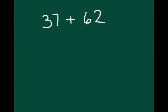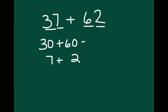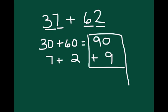All right, so with a Place Value Break Apart, we can think about it as just looking at our place value. For example, we could think of this as 30 plus 60 — 3 tens and 6 tens. And then we can also think of it as 7 plus 2. So by breaking it apart into place value, we would think of this as 30 plus 60 equals 90, and 7 plus 2 is 9.